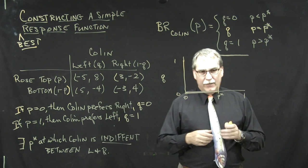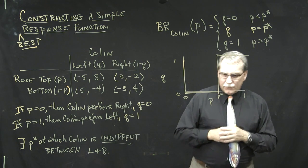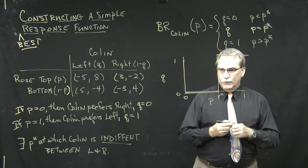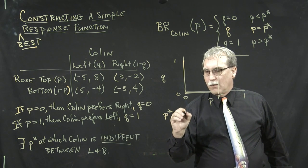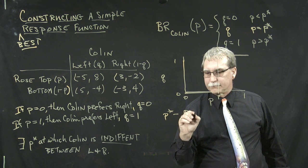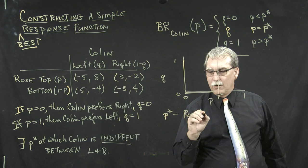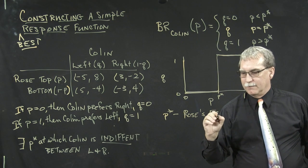So the question that we have then is, how do we find P star? P star, by the way, which is what Rose is doing, and we call it Rose's equalizing strategy.